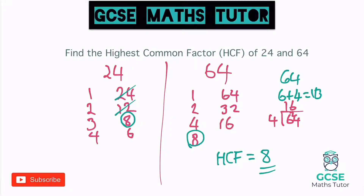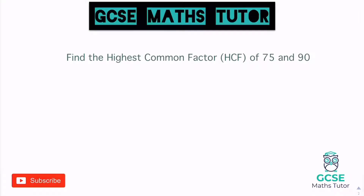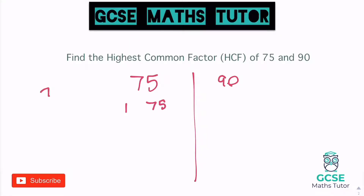Let's have a look at another one following that same process. Find the highest common factor of 75 and 90. Same again — let's split the page into 75 and 90 and start to find some factors. So one and 75. Two doesn't go in. Seven plus five equals 12, and 12 is in the three times table, so it does divide by three.